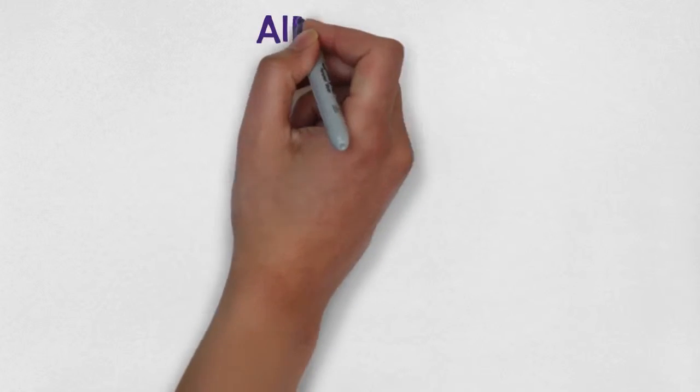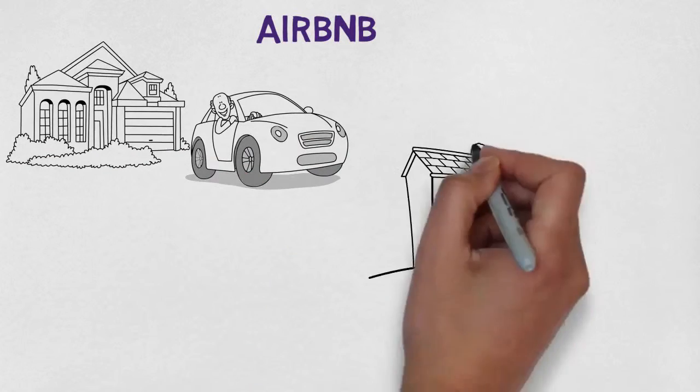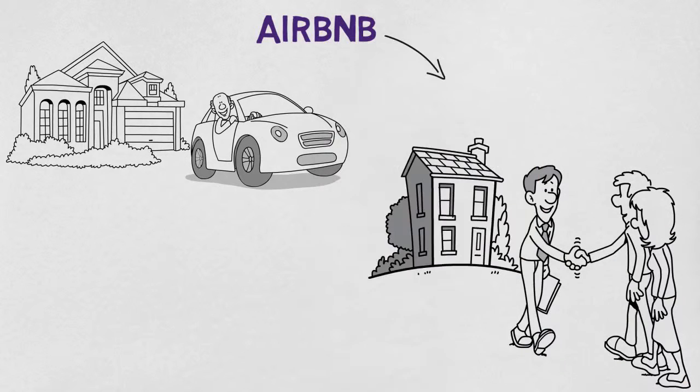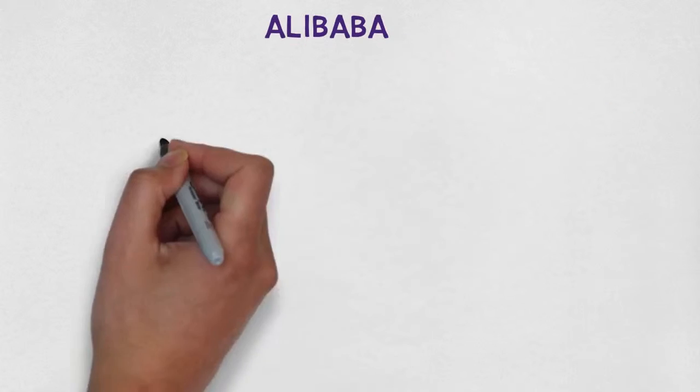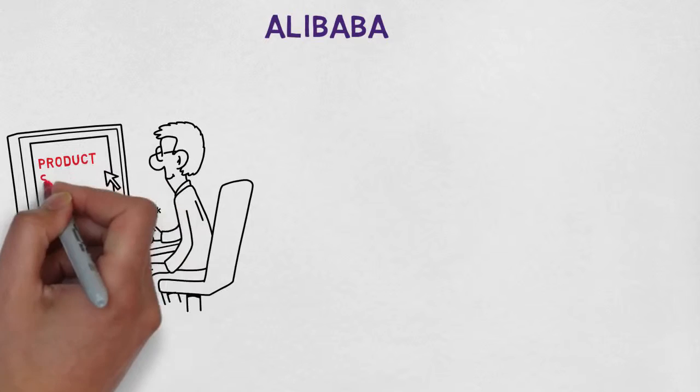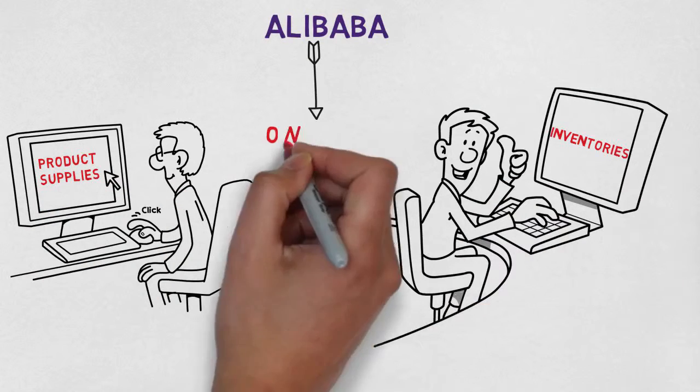Companies like Airbnb who made traveling and accommodations more convenient and affordable by connecting people who were looking for accommodations to people who have extra accommodations, and yet Airbnb owns no real estate. Alibaba made it convenient for sellers and buyers by connecting people looking for product supplies to people who have inventories of it, and yet Alibaba owns no inventory.